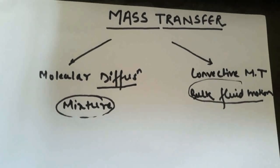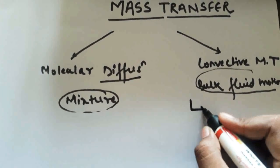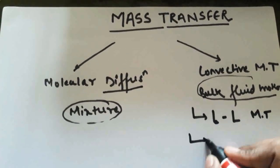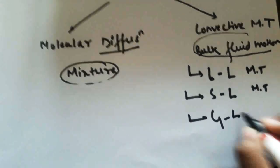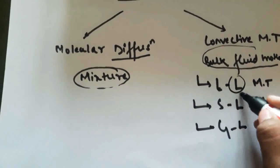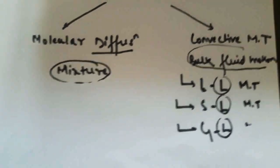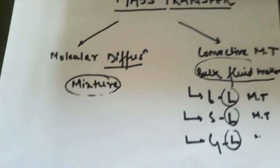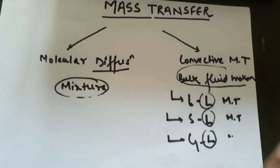Convective mass transfer is divided into three parts: liquid-liquid mass transfer, solid-liquid mass transfer, and gas-liquid mass transfer. In all these, liquid is the common component. This mass transfer occurs when we have a bulk fluid motion, meaning a liquid at higher concentration present in bulk in the mixture or beaker in which we are conducting the mass transfer.